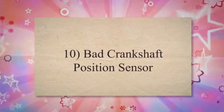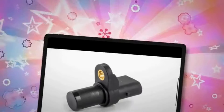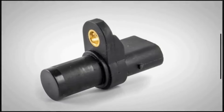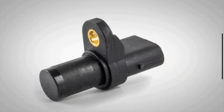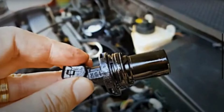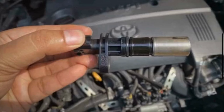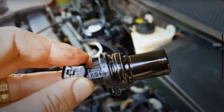10. Bad crankshaft position sensor. The crankshaft position sensor plays a crucial role in the engine control system by providing information about the rotational speed and position of the crankshaft to the engine control module. If the crankshaft position sensor is malfunctioning or fails, it can lead to timing issues, which may result in misfires in one or more cylinders, including cylinder 1.